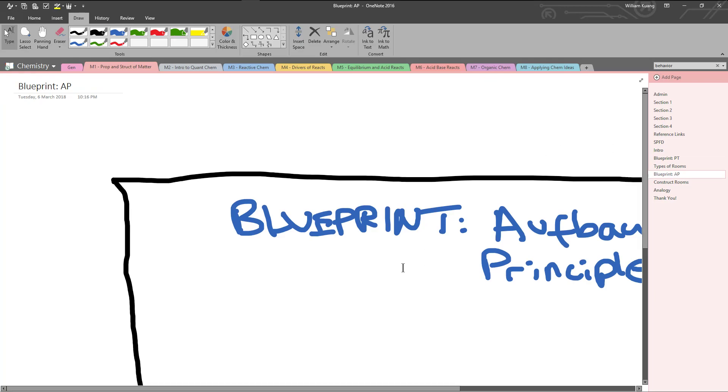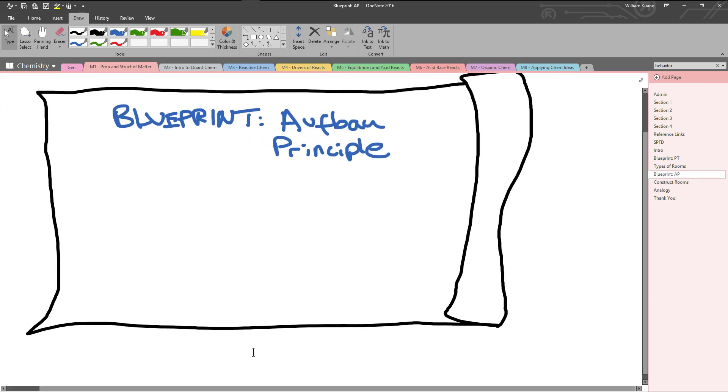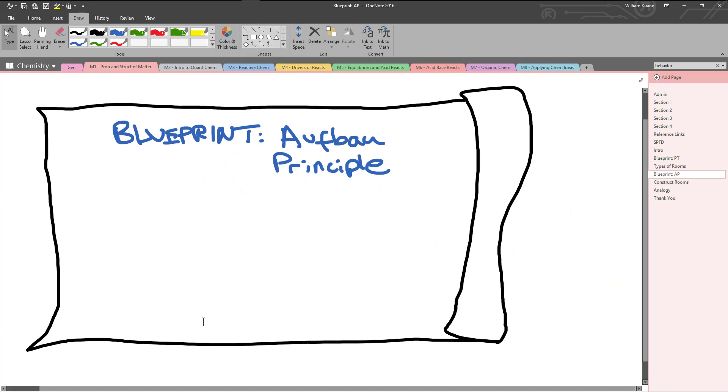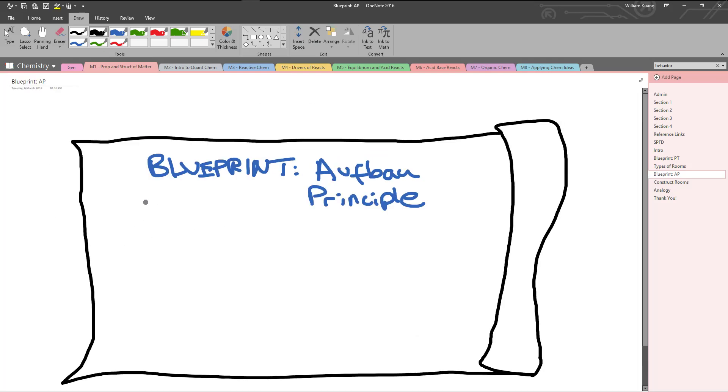The next question would be, how do we place these rooms in the levels? That's where the Aufbau principle comes in. You unroll your second blueprint, the Aufbau principle, but wait, it's blank. The intern gave you the wrong one, a blank piece of paper instead. But the Aufbau principle is quite an easy thing to do, so we'll be writing this from scratch. The first thing we do is write the S column. So we write 1S, 2S, 3S, 4S. This can go up to seven, but because we know we have four levels, I'm going to stop at four.